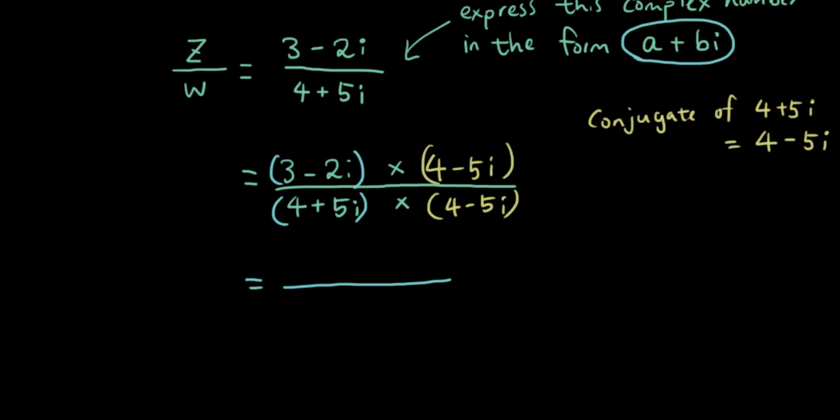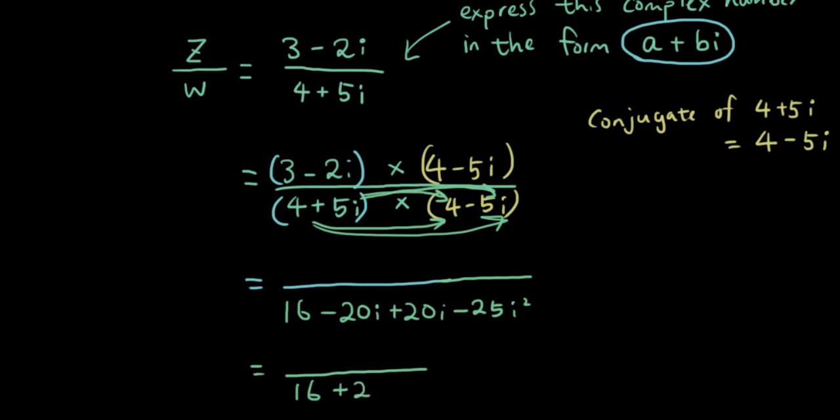So let's multiply the bottom out using binomial expansion. So 4 times 4 is 16, 4 times negative 5i is negative 20i plus 20i, because 5 times 4 is 20, 5 times 5 negative 25i squared. So the bottom part, I'm just going to finish the bottom part first. So it's 16 plus 25, so the bottom part is equal to 41.